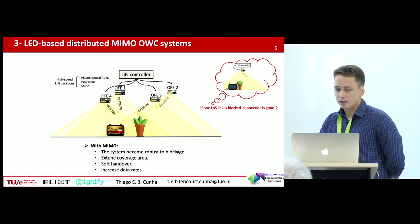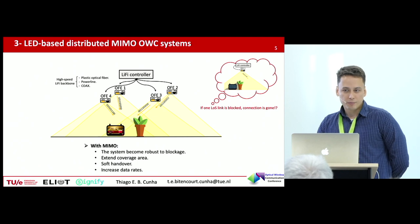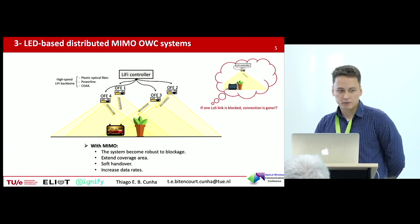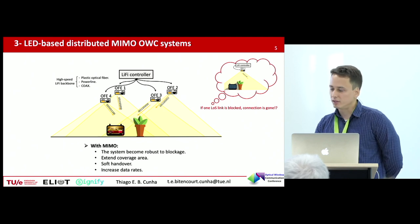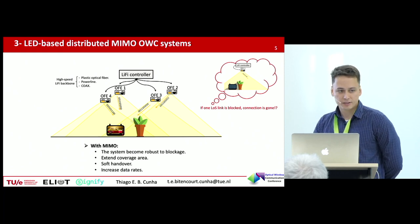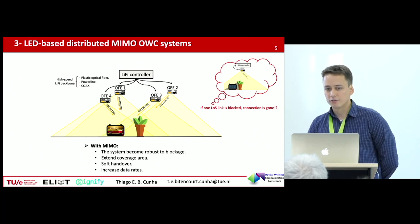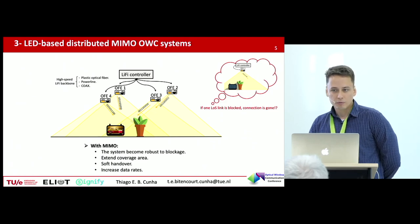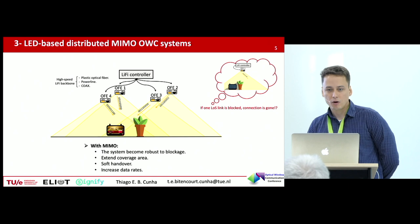When we talk about Li-Fi and optical wireless communications, one strong point is that light cannot go through the wall. This brings security for the physical layer, but it also means that if you block the line-of-sight link between the transmitter and the receiver, the connection is gone. MIMO, with multiple transmitters in the ceiling, can bring a solution to this physical layer challenge in a way that multiple signals are transmitted at the same time. And if we block one of the line-of-sight links, we still have others to use. MIMO also brings the multiplexing gain and many other qualities. But how can we do the power allocation for all those LEDs working simultaneously to improve performance?